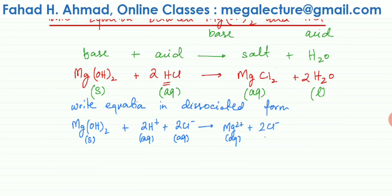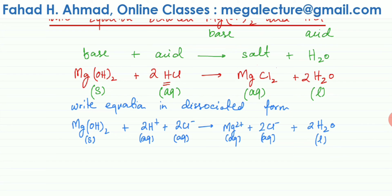Both ions in MgCl₂ are separate. Water molecules don't really dissociate — water ionizes very little, so most of it remains as water and is not dissociated. Only acids, bases, and salts that are aqueous will break down into their ions. So I've now written the equation in dissociated form.